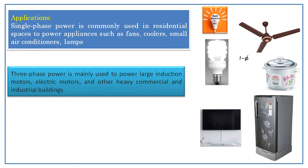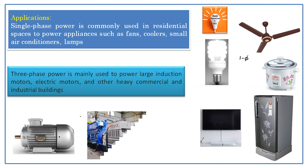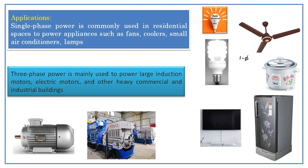For three phase power, it is mainly used to power large induction motors, electric motors, and other heavy commercial and industrial equipment. These large machines used in industries take three phase supply only. Simply put, for small power applications like bulbs, fans, and home appliances, we use single phase supply. The large machines used in industries take three phase supply.